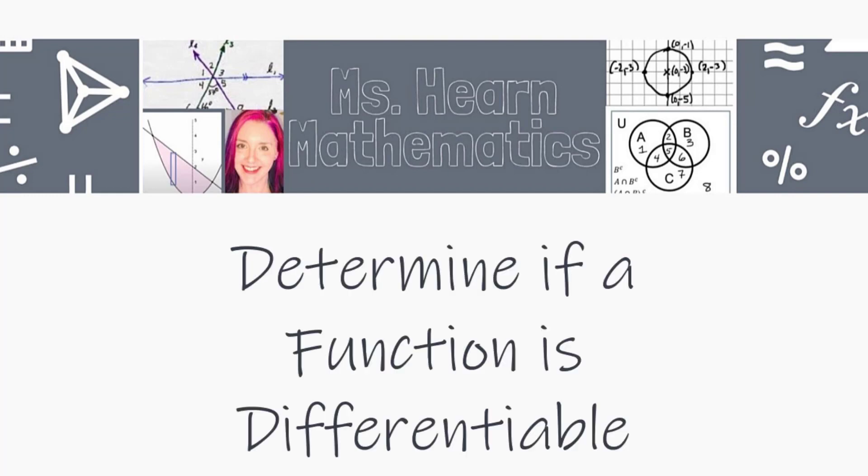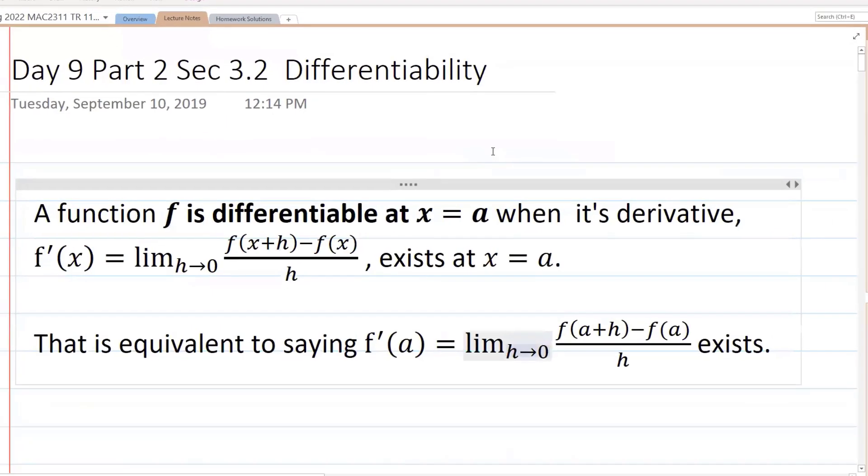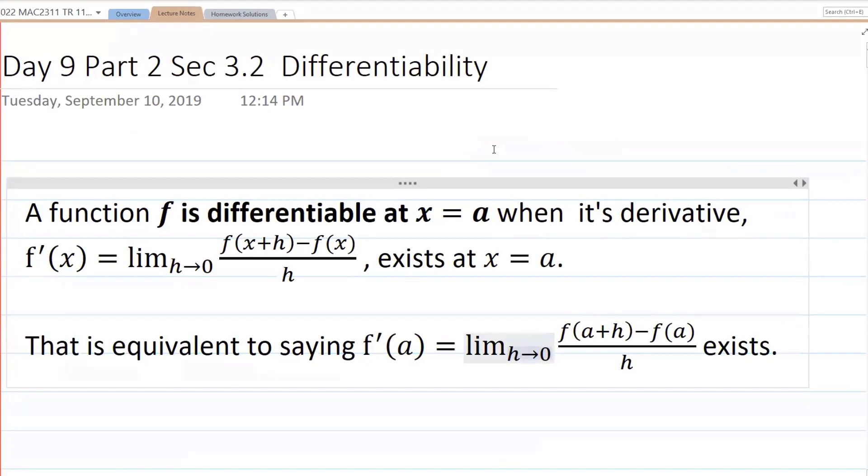That helps other students to find the video. Differentiable just means that the derivative exists. How do we know if it exists? Well, it's a limit. So if the limit exists, then the derivative exists.